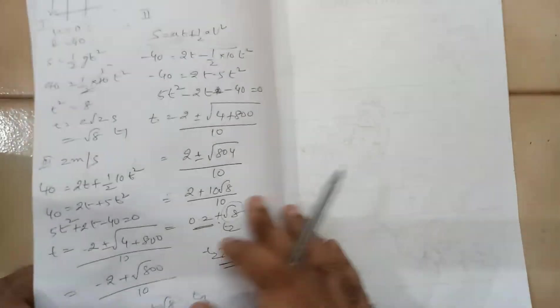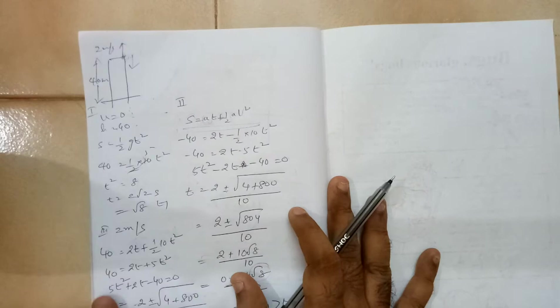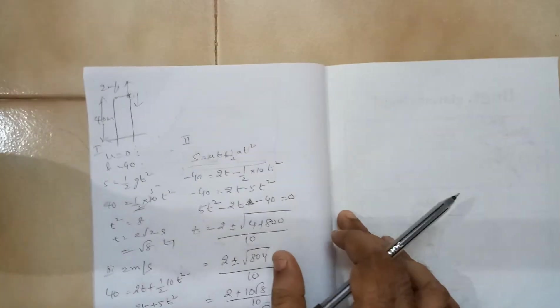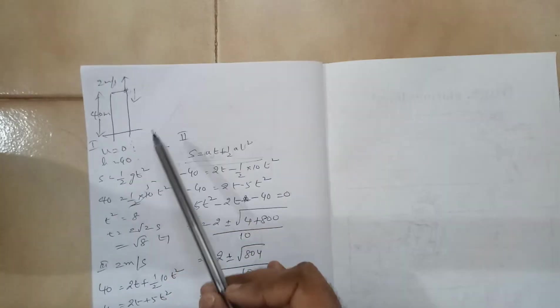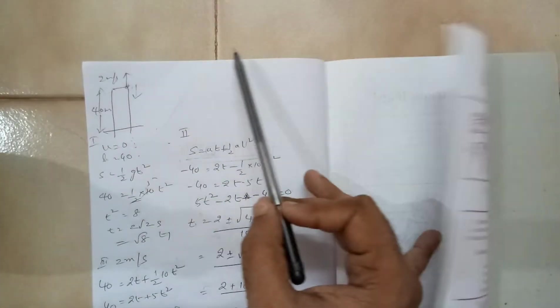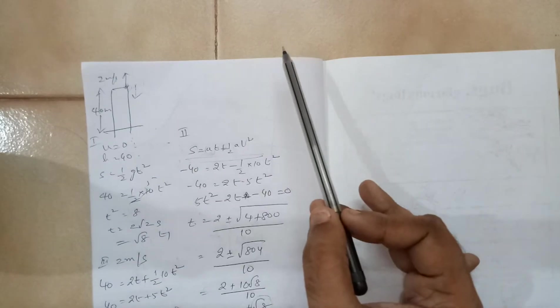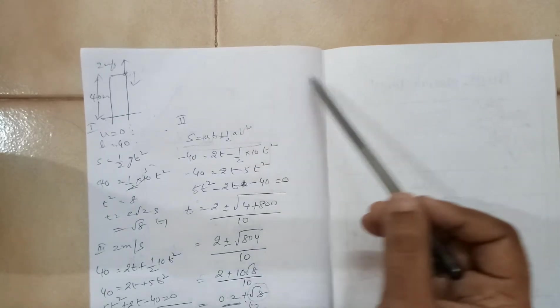Now, let us take a numerical to understand how we apply this. So there is a building, let us say, and the building height is 40 meters. I am taking case 1. I simply release the ball. So what are the parameters given here?